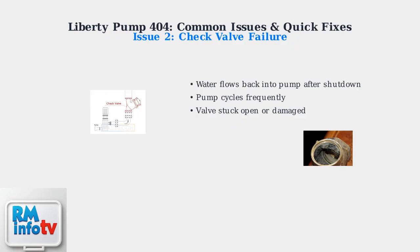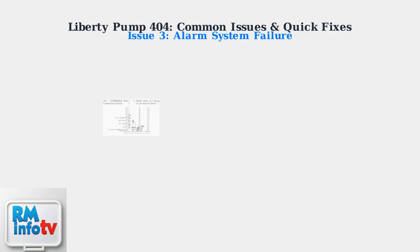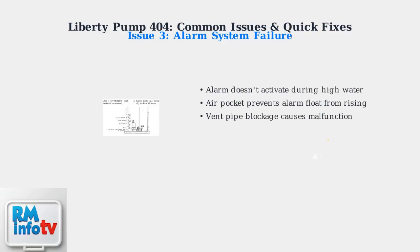Check valve failure is another frequent problem. When the check valve becomes stuck, leaks, or is damaged, water flows back into the pump after it shuts off, causing the pump to cycle frequently and reducing efficiency. To fix check valve issues, inspect the valve for debris, corrosion, or physical damage, clean it thoroughly, and if the valve flap is cracked or won't seal properly, replacement is necessary. Always verify the installation direction matches the flow arrow.